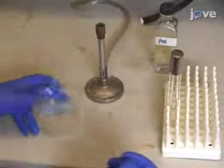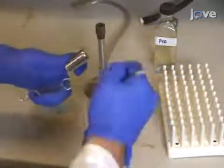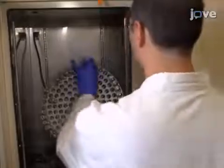To begin, inoculate 5 mL of PYE medium with bacteria from a plate of colobacter crescentus strain NA-1000. Grow the culture overnight at 28 degrees Celsius with shaking.